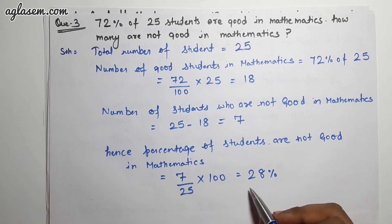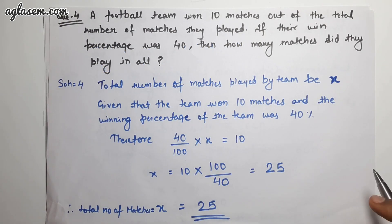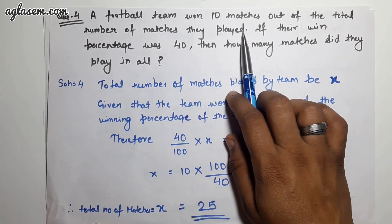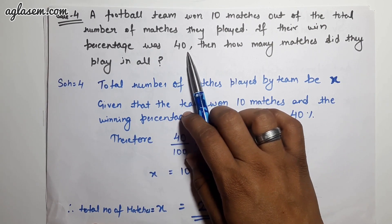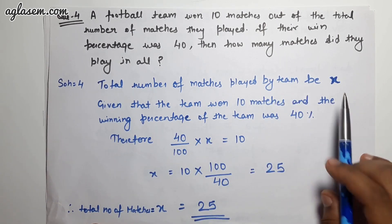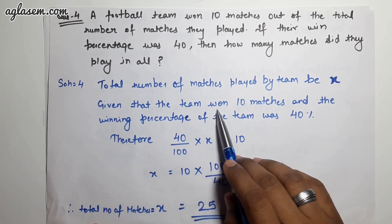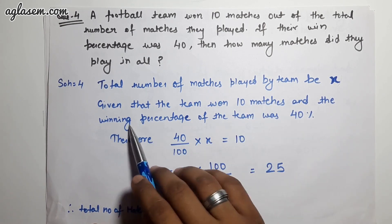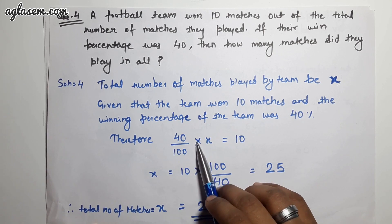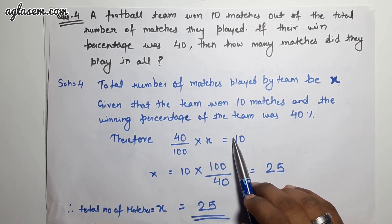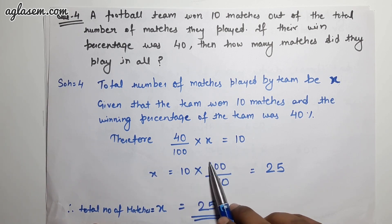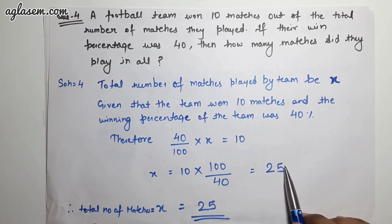Question 4: A football team won 10 matches with a winning percentage of 40%. How many matches did they play in all? Let total matches = x. Then (40/100) × x = 10, so x = (10 × 100)/40 = 25. The total number of matches played is 25.